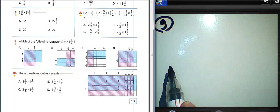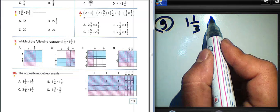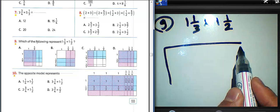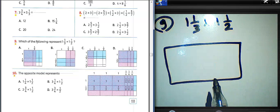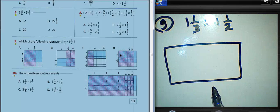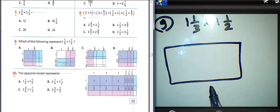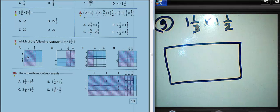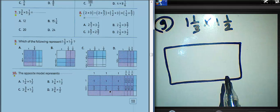Question number nine: which of the following represents one and one over three, and one and one over two? We can draw this example. First, one and one-third — look at one and one over three. And one and a half — we have one and a half here, and one and one over three. I will draw it here.